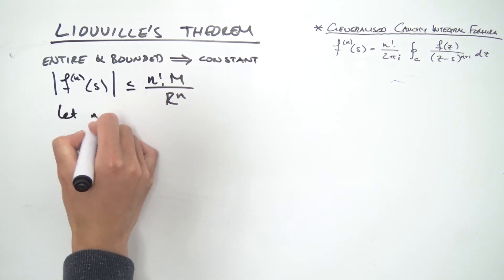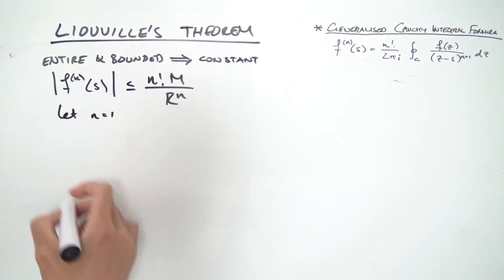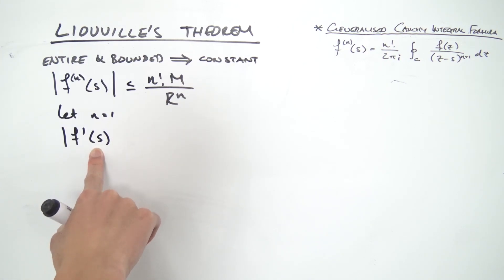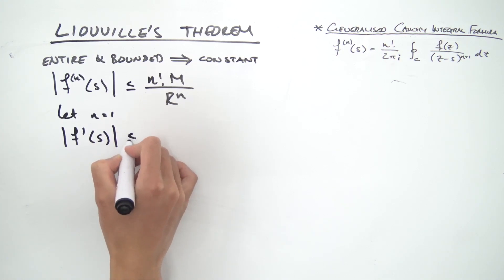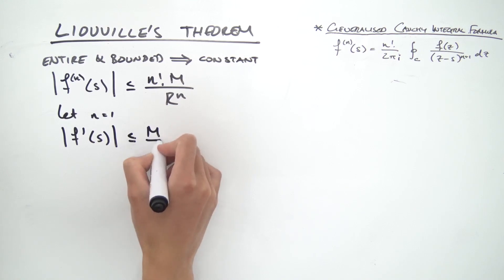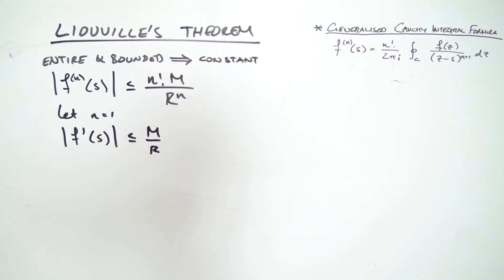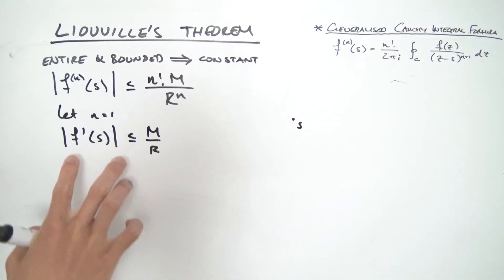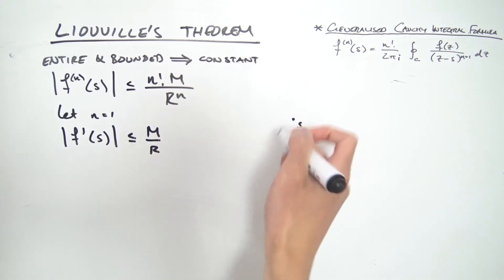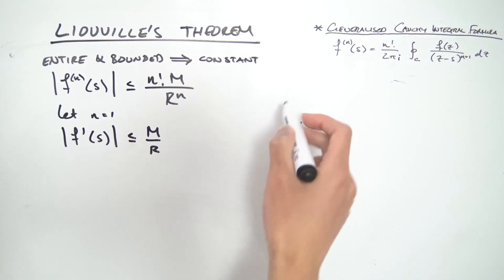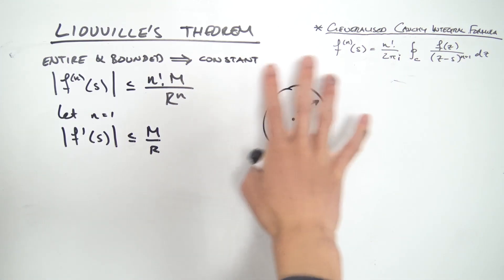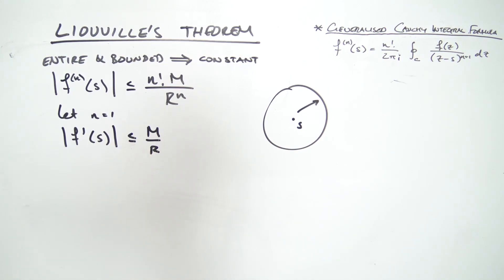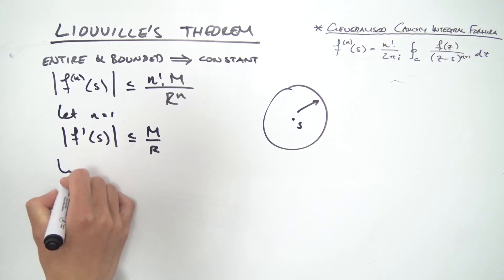Now we simply let n = 1, investigating only the first derivative. We have |f′(s)| ≤ M / r. Since our function is entire, s can be any point in the complex plane, and this inequality must hold for the circle of any radius r — because the function is holomorphic everywhere, we can make the circle as large as we like.